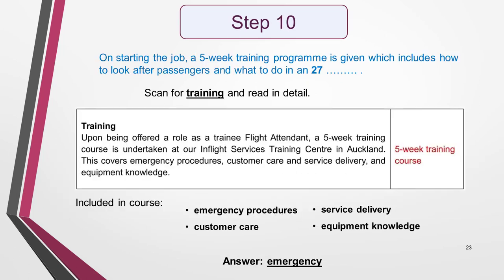Finally, I read sentence 27: 'On starting the job, a five-week training program is given, which includes how to look after passengers and what to do in an something.' I remember that one of the paragraphs in the text is titled 'training,' so I go straight to this section and see that I've noted 'five-week training course' beside the paragraph — this must be the location of the answer. I read the paragraph in detail and find four things named as being included in the course: emergency procedures, customer care, service delivery, and equipment knowledge. The only word from this list that makes sense and is grammatically correct in the gap is 'emergency.' Note the indefinite article 'an' before the gap — this means that the missing word must start with a vowel, which is another little clue that 'emergency' is the correct answer. I fill in the answer sheet and the whole question is now complete.